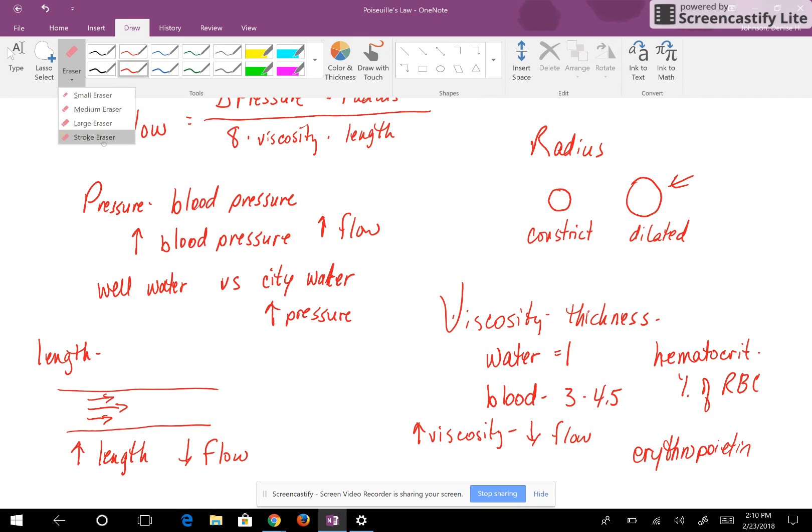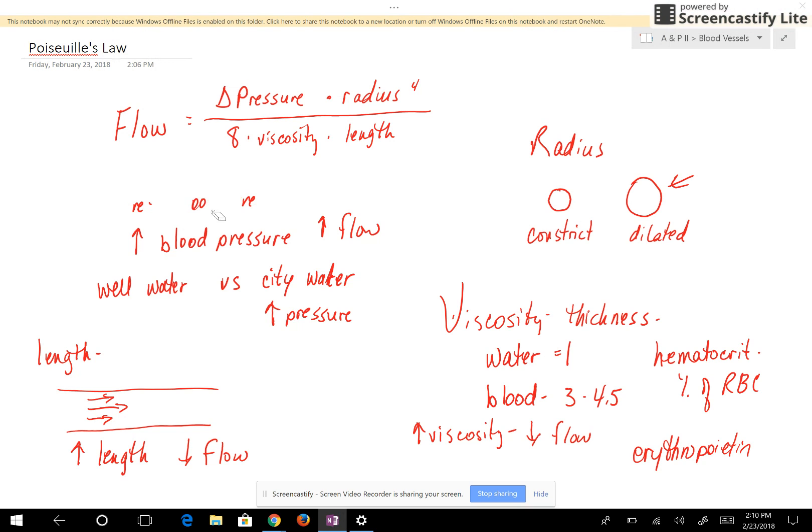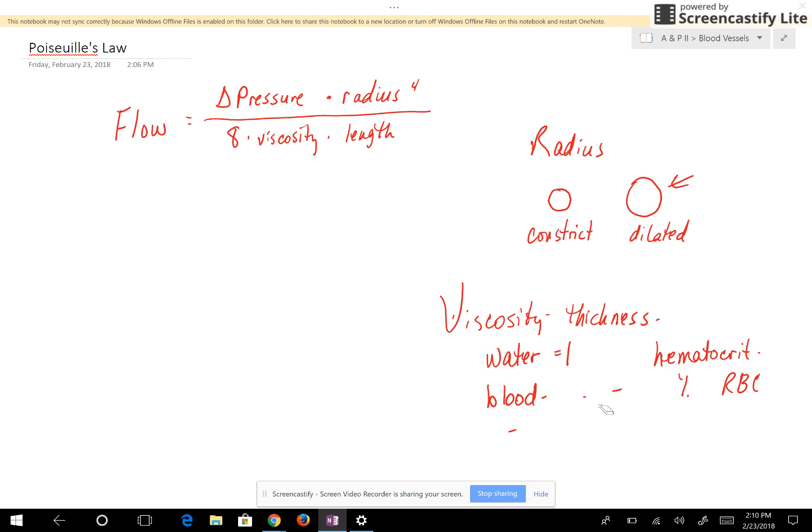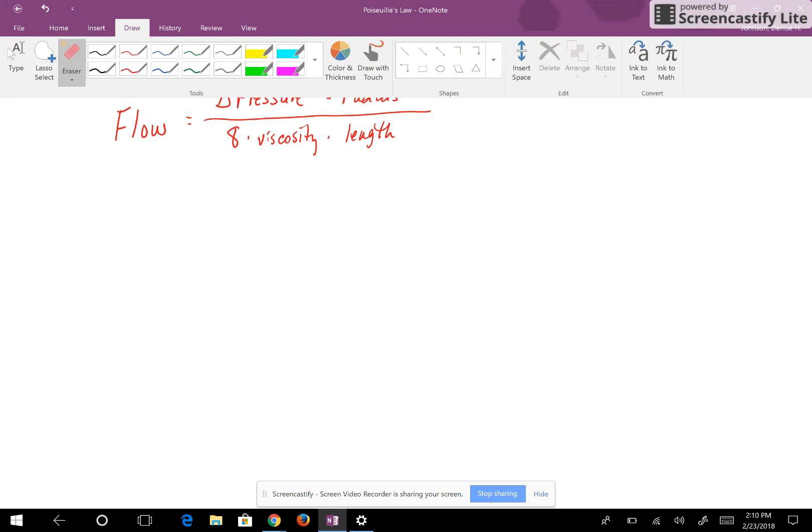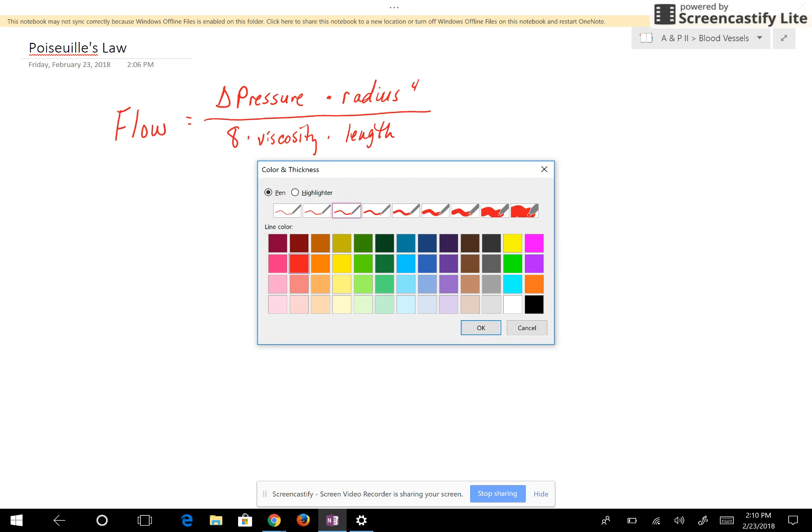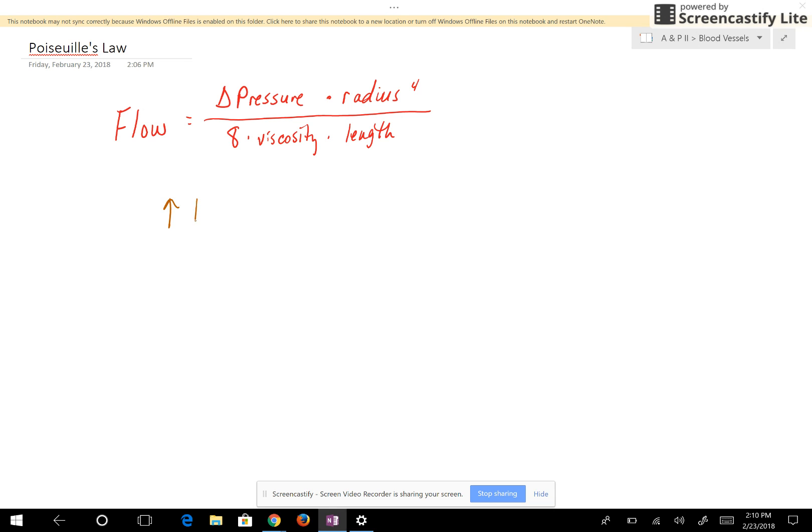So to recap, let's erase all of this. If we want to increase the flow of blood, then we will do one of these four things: we will increase the pressure, we will increase the radius, we will decrease the viscosity, or we'll decrease the length.